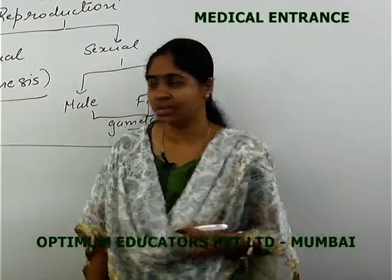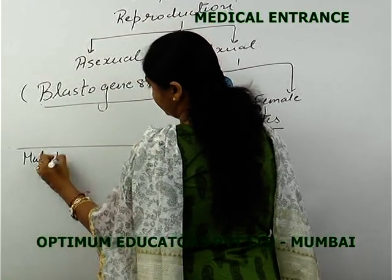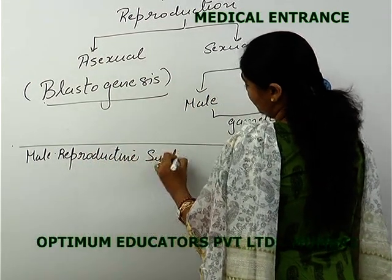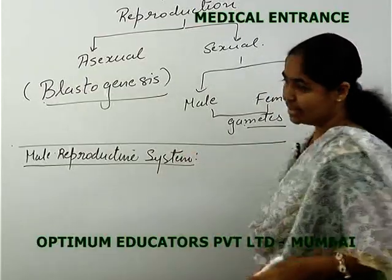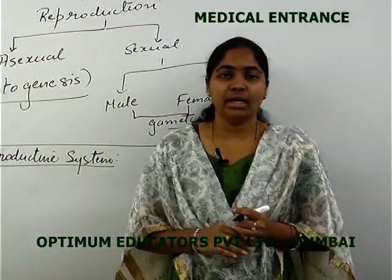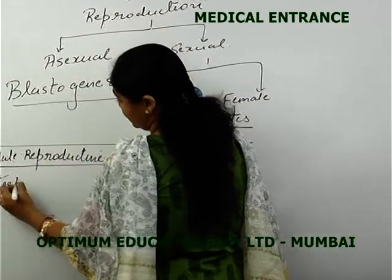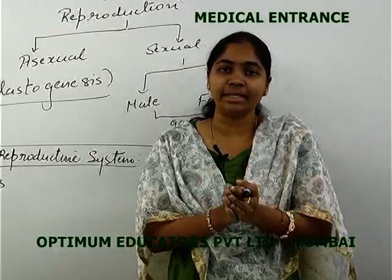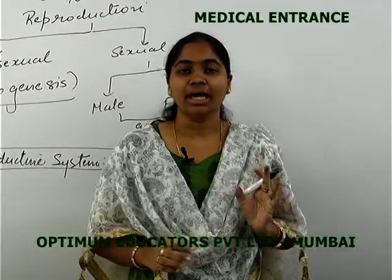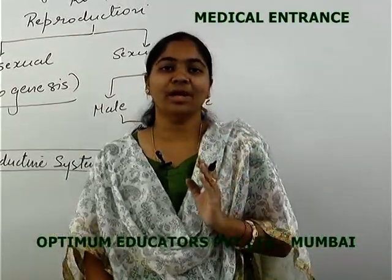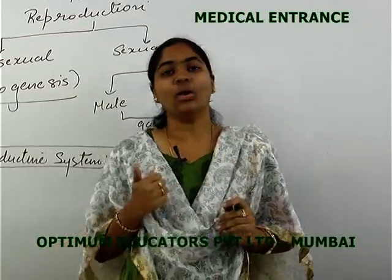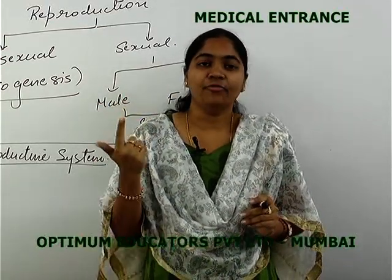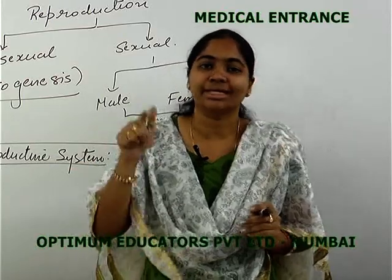The male reproductive system in human beings consists of primary and secondary organs. A set of organs connected only to reproductive capacity are known as sexual organs. Primary organs are those involved in gametogenesis and the formation of hormones controlling the sexual process.